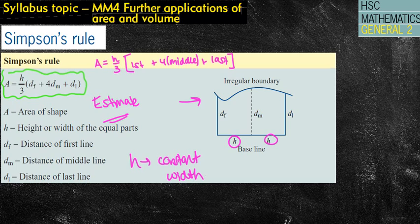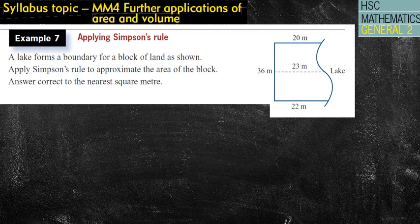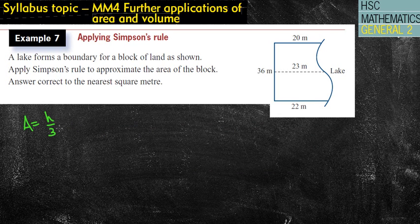The best thing to explain this rule is to go through an example. A lake forms a boundary for a block of land as shown. Apply Simpson's Rule to approximate the area of the block, answer correct to the nearest square meter. So I'm going to look at that rule: H over 3, times the first plus 4 times the middle value plus the last value.